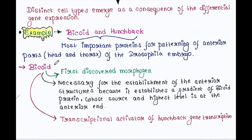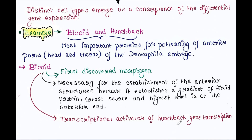Bicoid is the first discovered morphogen. It is necessary for the establishment of anterior structures because it establishes a gradient of bicoid protein whose source and highest level is at the anterior end. This bicoid protein is actually the transcriptional activator of the other protein, hunchback.